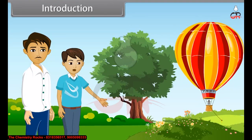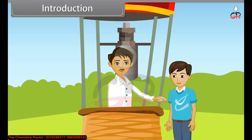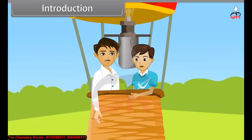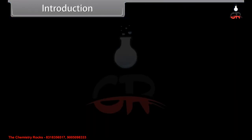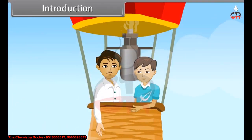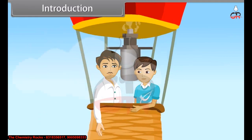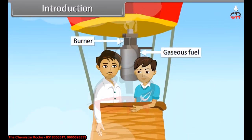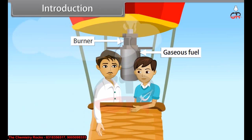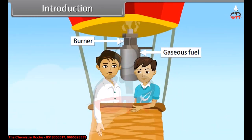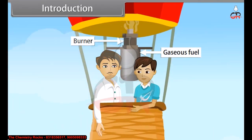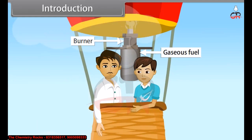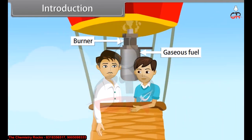Come on dad, let's get on the balloon. Easy Rohit, easy. Yippee, it is going up now. We are flying like a bird. Dad, I want to ask you something. Yes Rohit, tell me. How does it get into the air? In this, we use gaseous fuel to heat up the air in the envelope to move the balloon off the ground and into the air. One more thing I want to share with you: the gaseous state has no definite shape. In this lesson, you will learn gaseous and liquid states of matter.